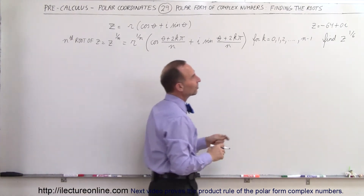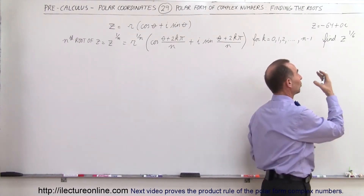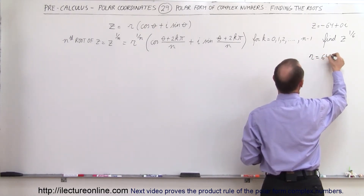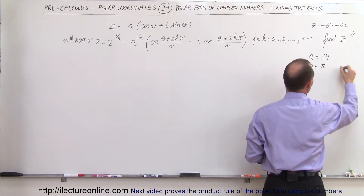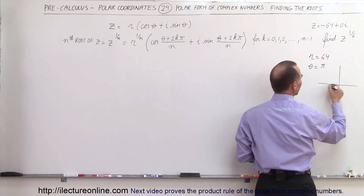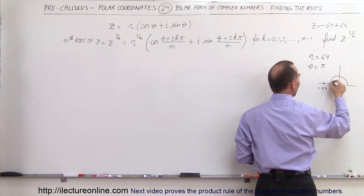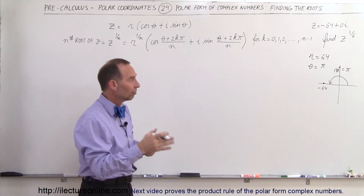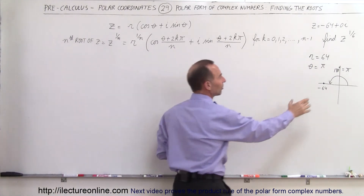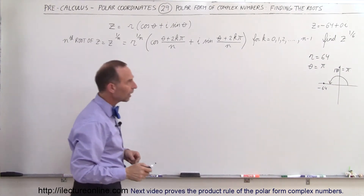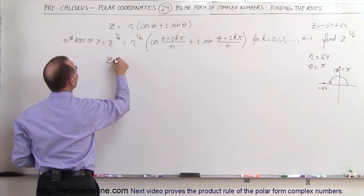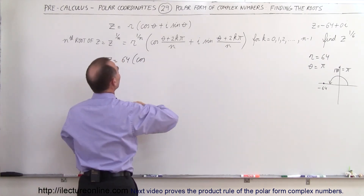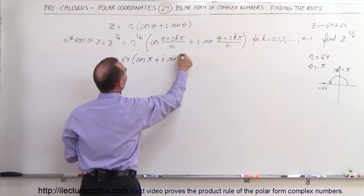If z is minus 64 plus 0i, you might wonder why that's a complex number since it only has a real part — but if we treat it as a complex number, r is equal to 64 and theta is equal to pi. Looking at polar coordinates, a value of minus 64 on the real axis gives an angle of 180 degrees, which equals pi radians, and a distance of 64 from the origin. So z equals 64 times the cosine of pi plus i times the sine of pi.